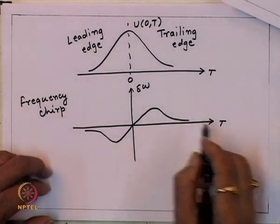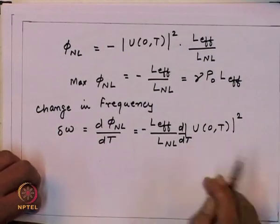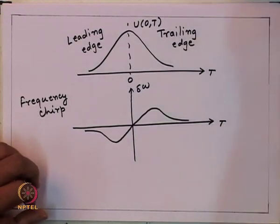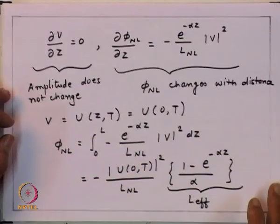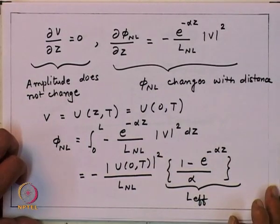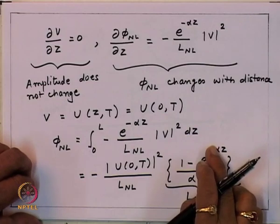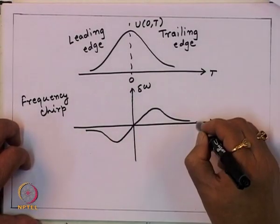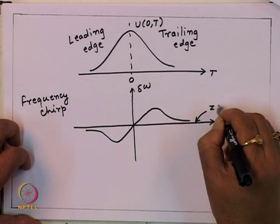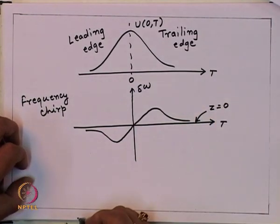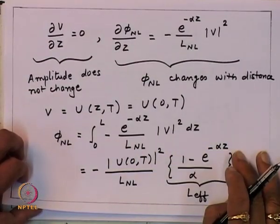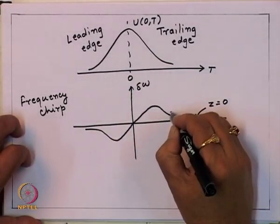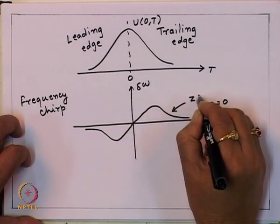When z = 0 there is no phase change and hence no frequency change. As z increases, the phase increases and the chirp grows. For z₁ > 0, we see a chirp profile, and for z₂ > z₁ the slope of the chirp increases further, always remaining positive. The chirp slope keeps increasing as a function of distance.